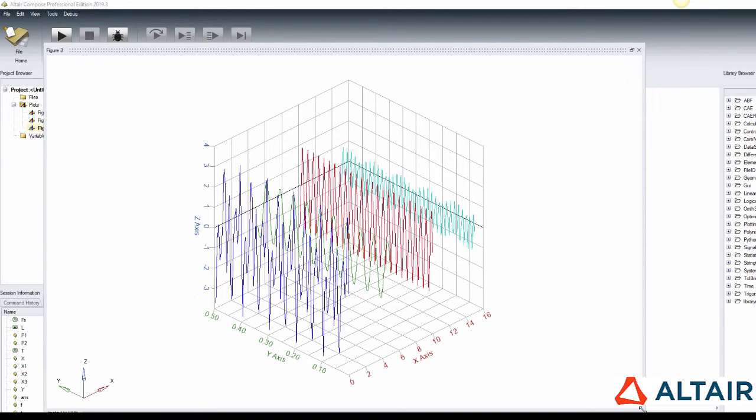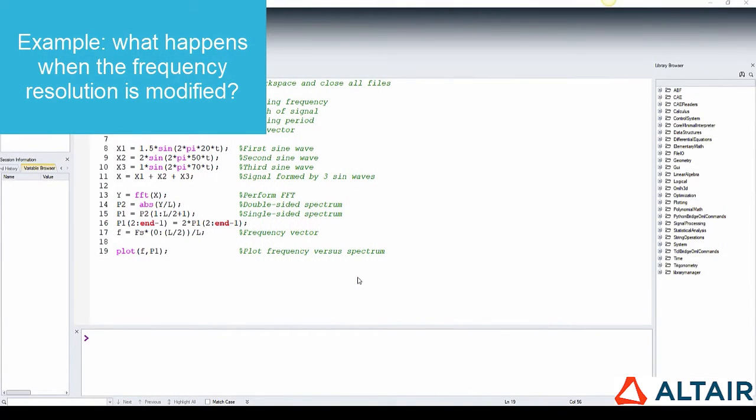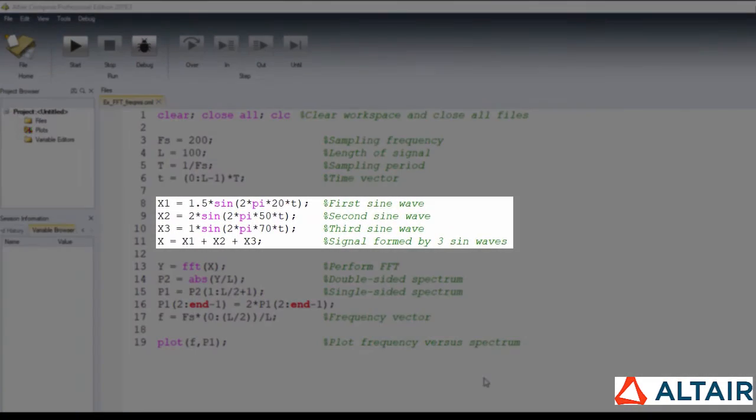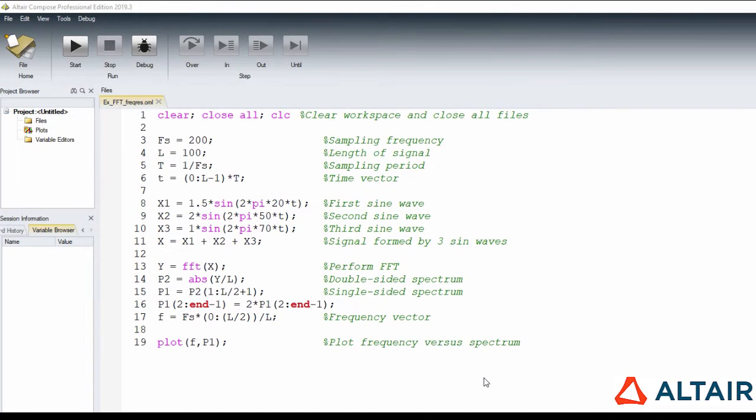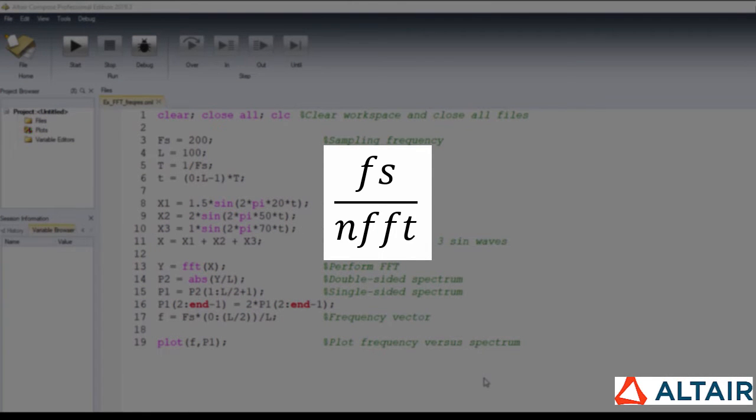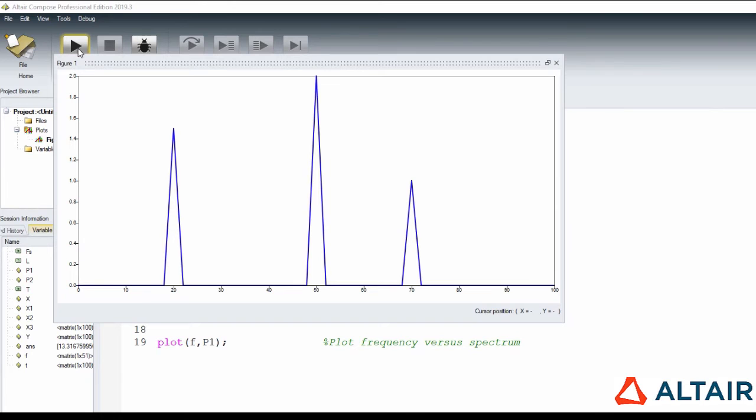The second example will explore what happens when the frequency resolution is modified. So, using the same signal from the previous exercise, we saw that the frequencies associated with the outputs are spaced in increments of Fs over N, which is the frequency resolution. In this example, it is equal to 2 Hz.